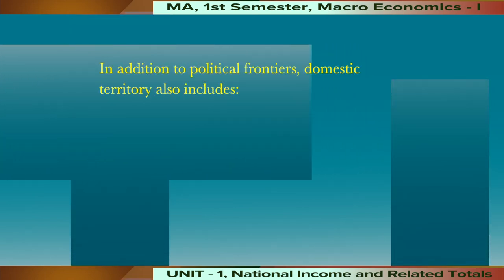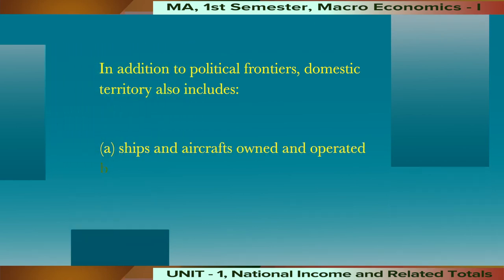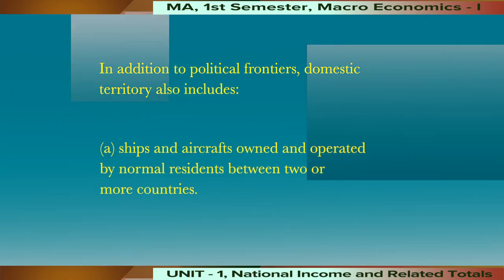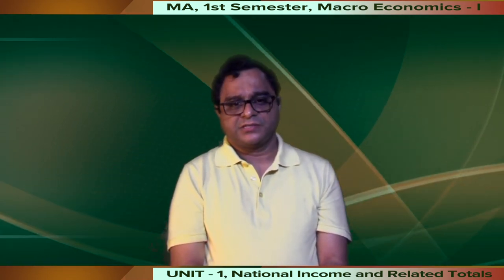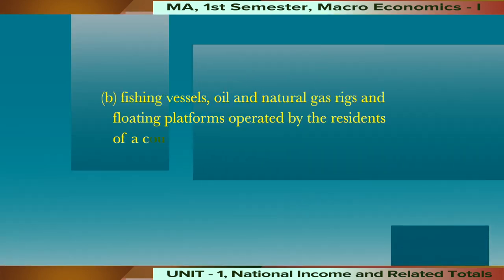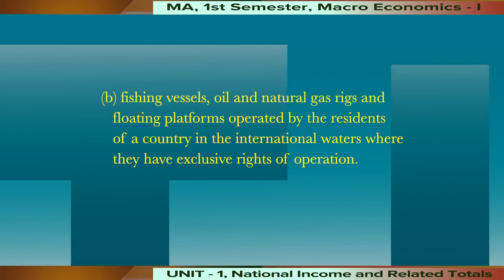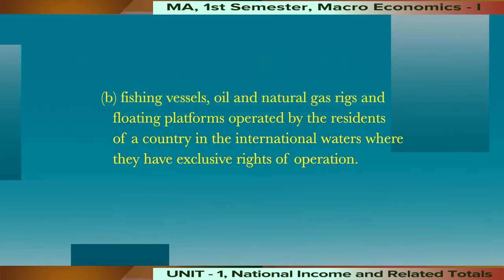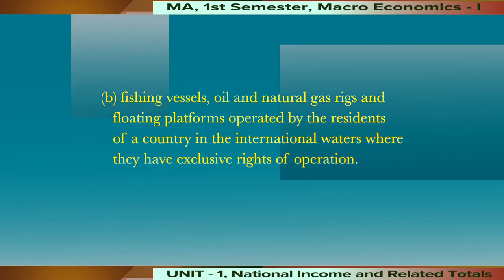In addition to political frontiers, domestic territory also includes: first, ships and aircraft owned and operated by normal residents between two or more countries — for example, planes operated by Air India between Russia and Japan are part of the domestic territory of India. Similarly, planes operated by Singapore Airways between India and Japan are part of the domestic territory of Singapore. Second, fishing vessels, oil and natural gas rigs, and floating platforms operated by the residents of a country in international waters where they have exclusive rights of operation — for example, fishing boats operated by Indian fishermen in international waters of the Indian Ocean are considered part of the domestic territory of India.